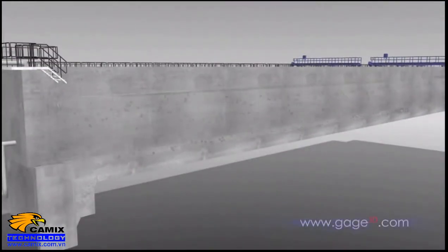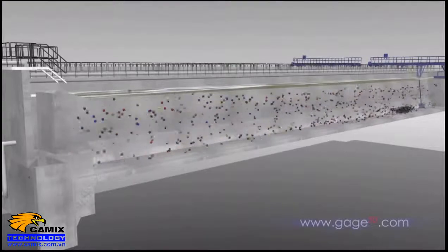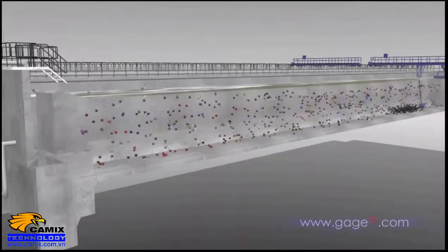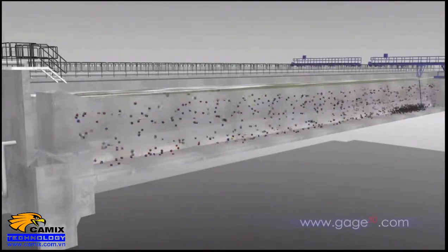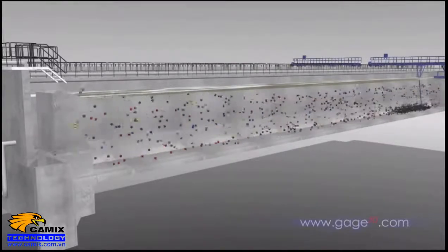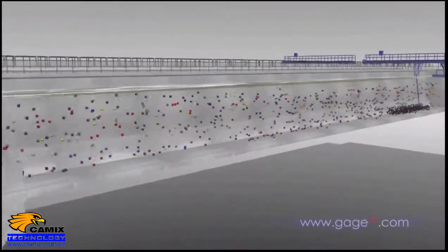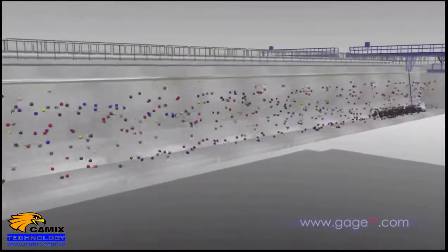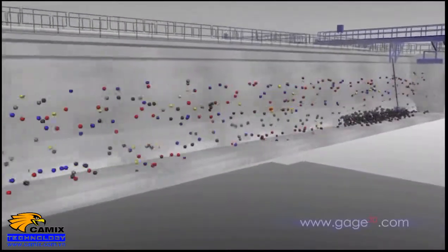The next stop within the headworks is the grit removal chamber. Grit is made up of large, heavy particles like sand or eroded cement. Water flows slowly through this tank, keeping organic matter like food, waste, bacteria or excrement in suspension but giving the heavier grit a chance to fall to the bottom.